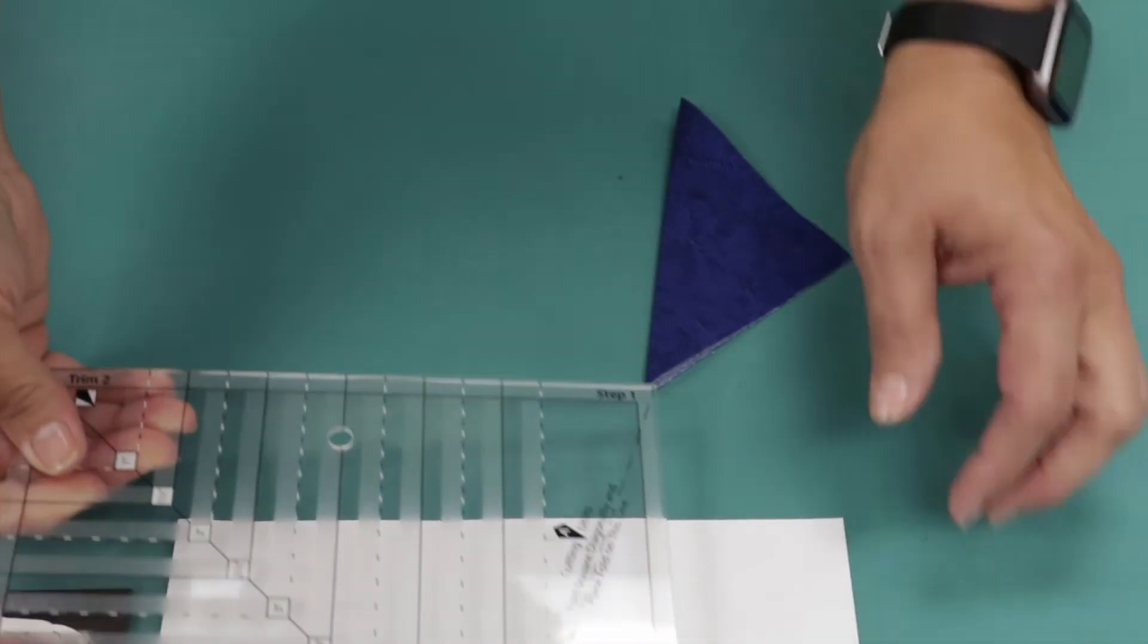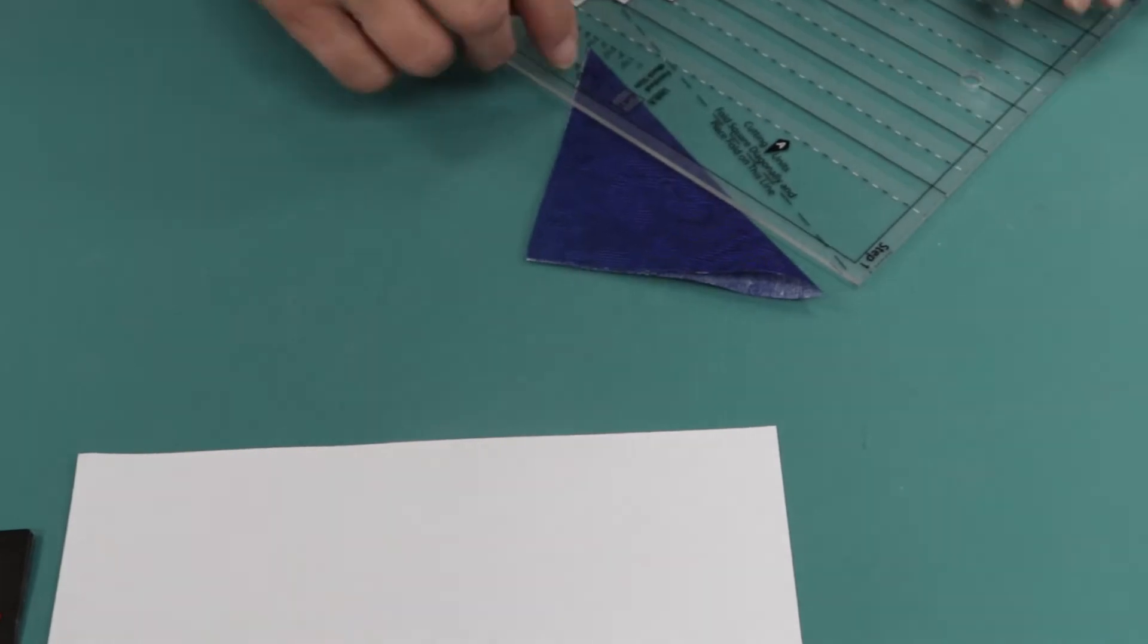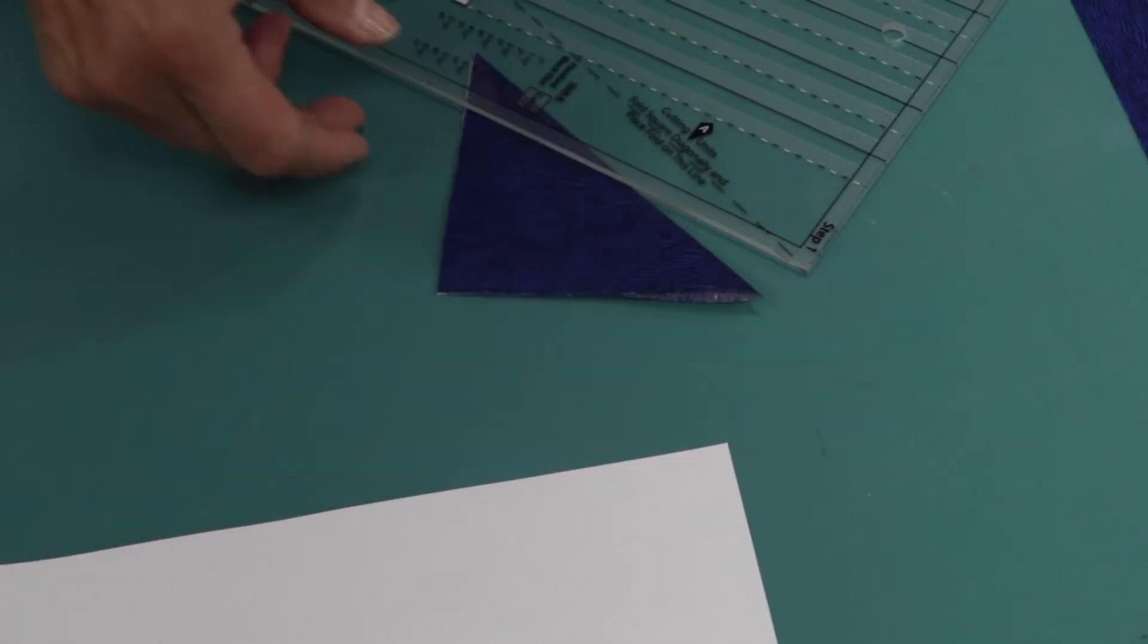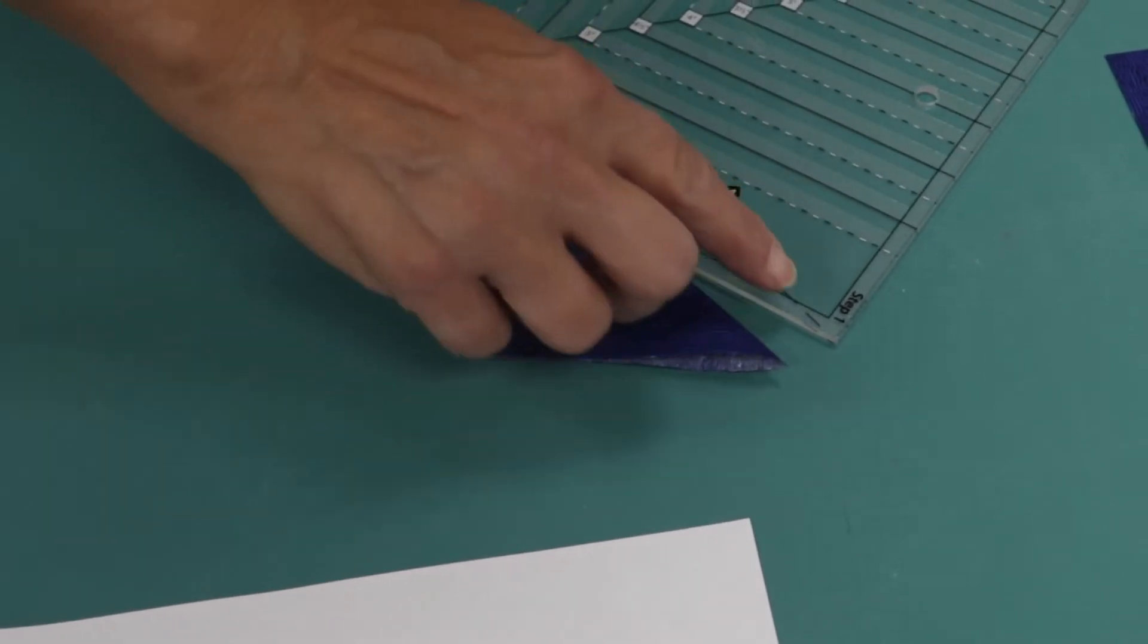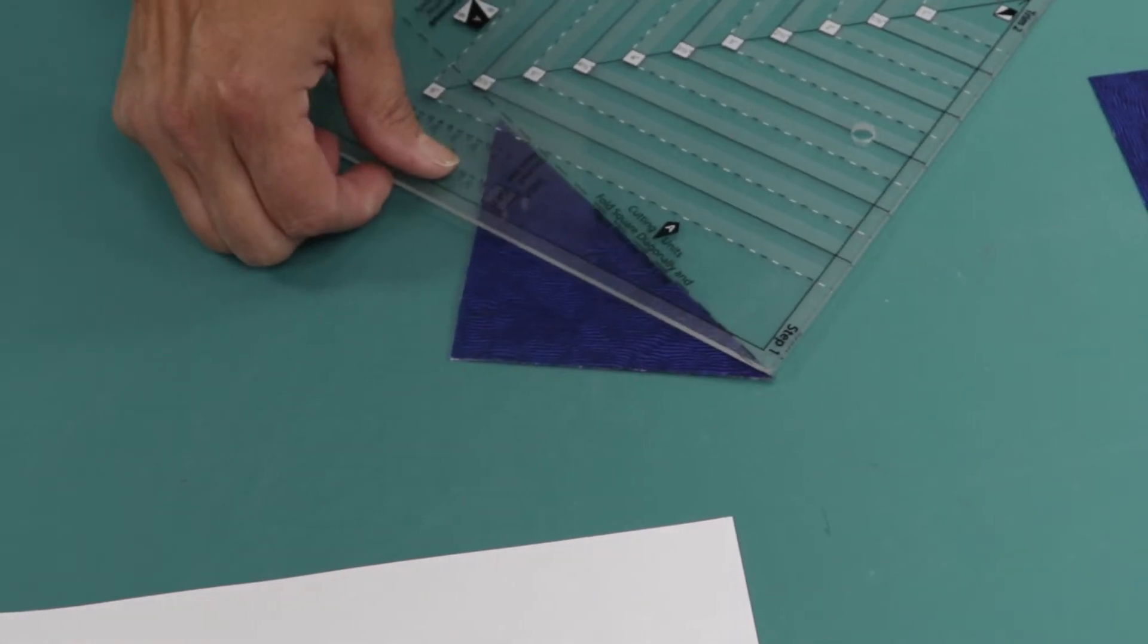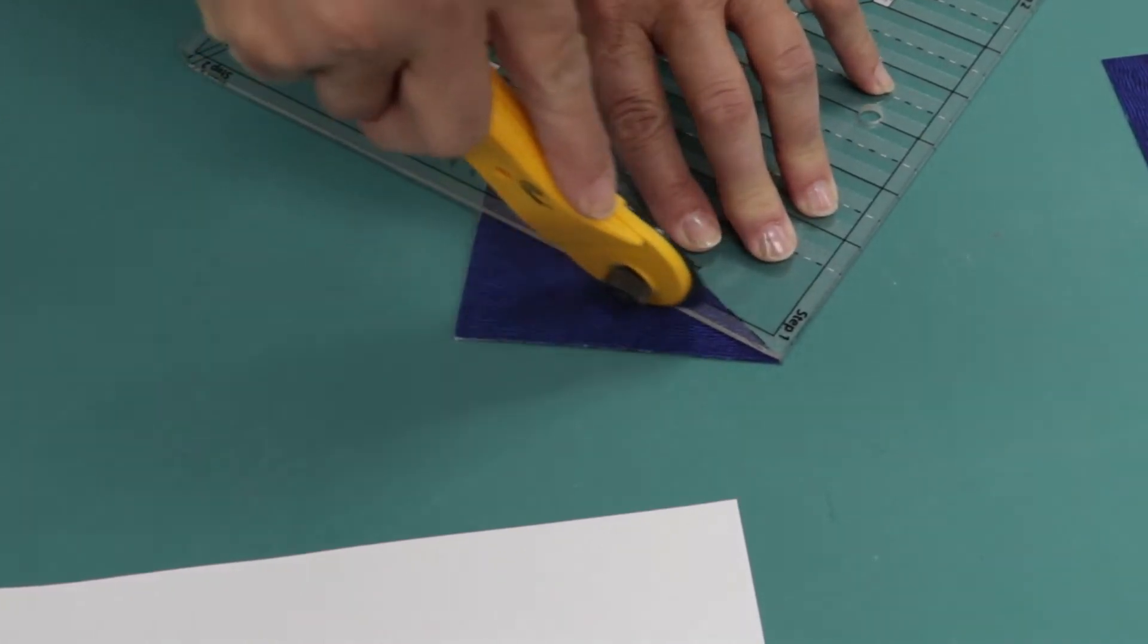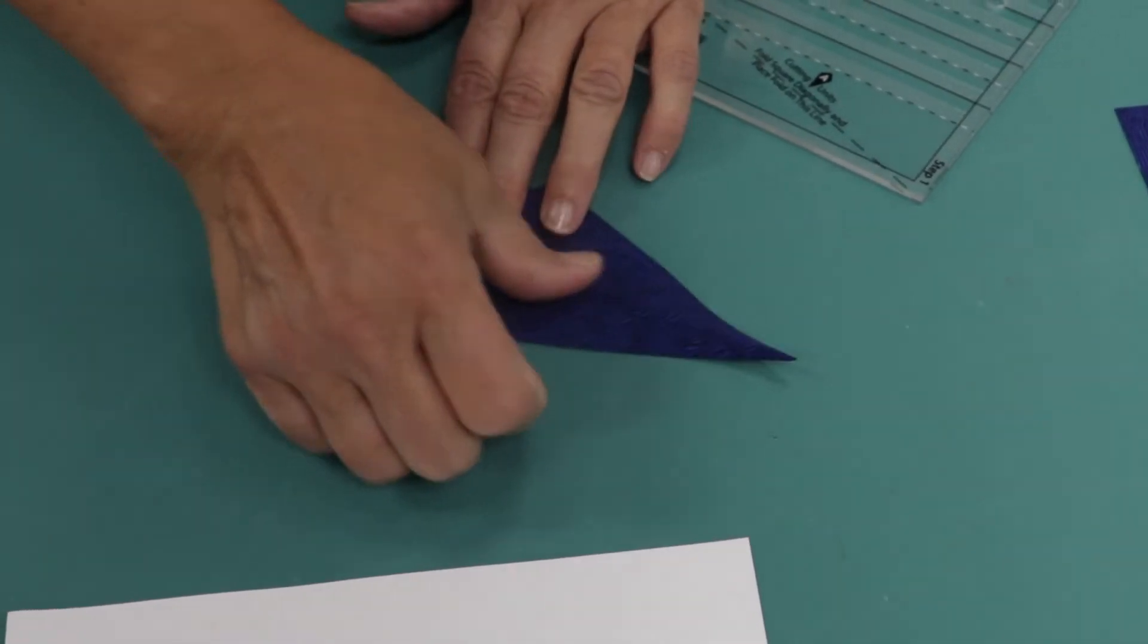So we'll take our ruler. And what we're going to do is we're going to place the fold of our A units, our squares. And we're going to line the point right up with the top of the ruler and the fold right along this dashed line. So depending on how big your square is, it's going to fall along that line. So I'm going to move the dotted line along the fold, meeting up at the top.